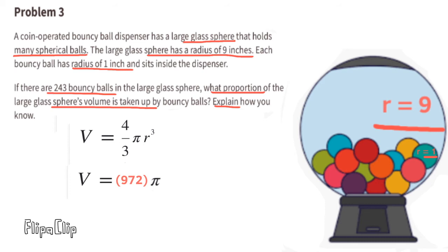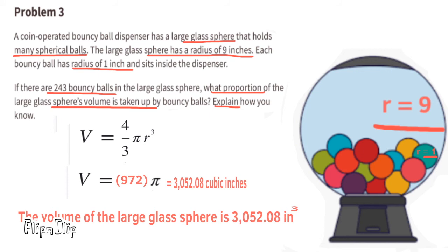Using 3.14 to approximate pi, we get 3052.08 cubic inches. The volume of the large glass sphere is 3052.08 inches cubed.